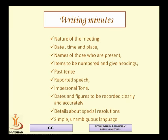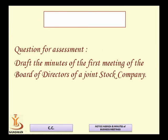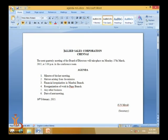Now let's see an example of how to write minutes and agenda. This is an example: Allied Sales Corporation, Chennai. The heading of the company must be centered, as the company uses a letterhead. The next line shows the notice: 'The next quarterly meeting of the board of directors will take place on Monday, 17th March 2015 at 5 PM in the conference room.' This line is the notice, showing the date, place, time, and nature of the meeting.